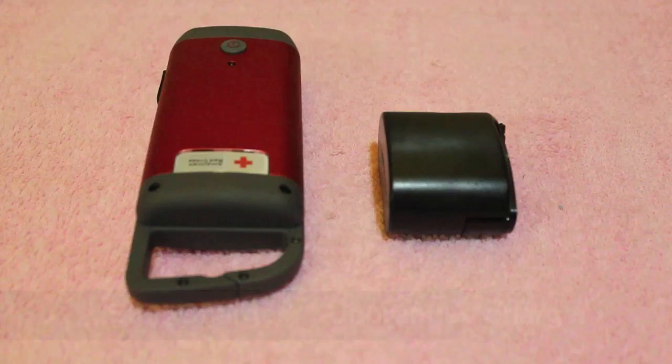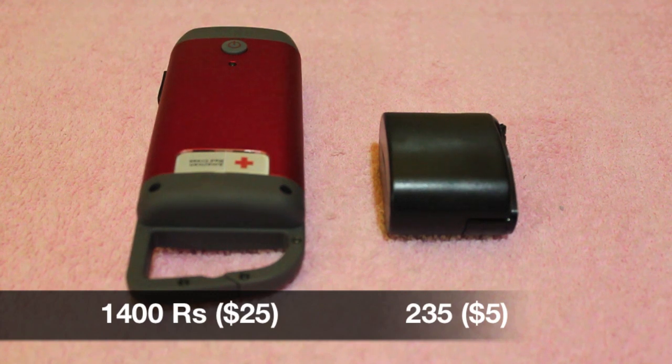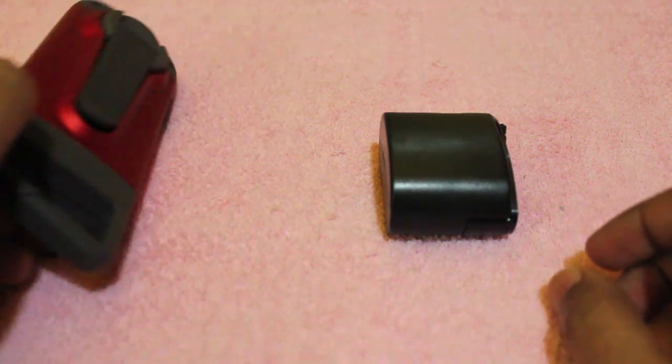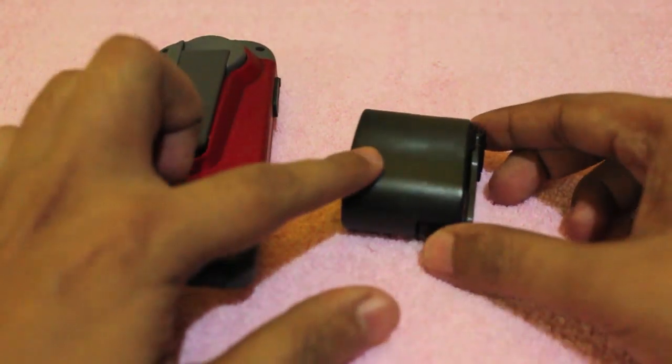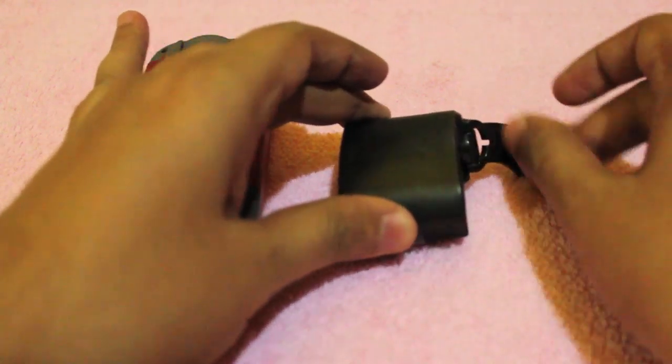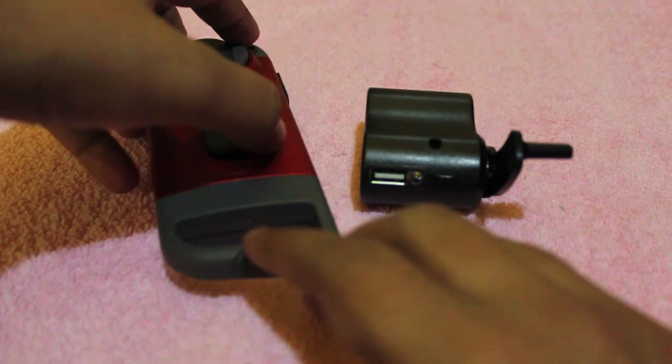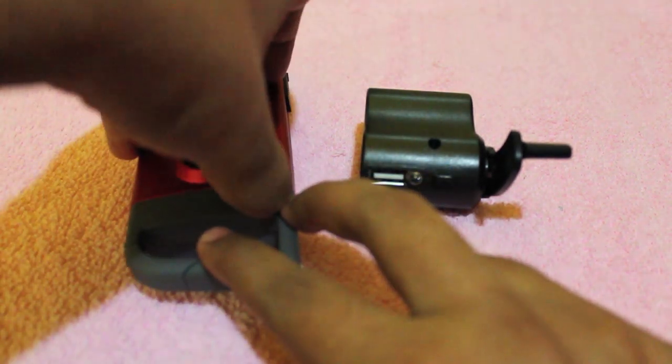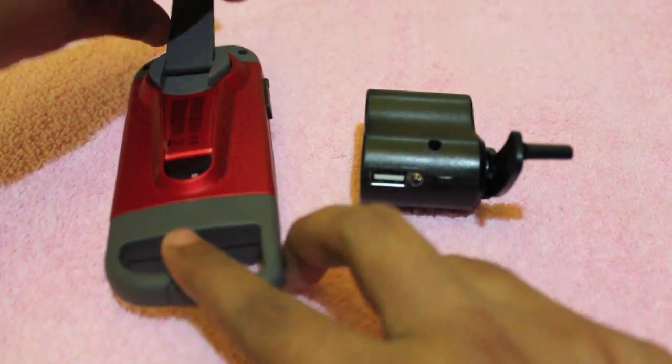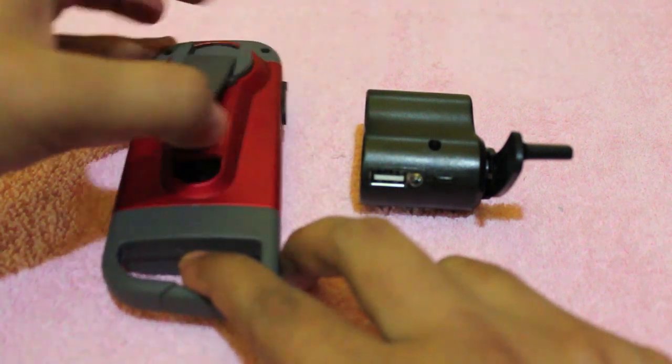Let's take a look at cheap versus costly hand cranks. One is an Eton charger, one is unbranded. One costs 1400 rupees and the other costs 250. Both chargers can charge other devices with hand cranks.